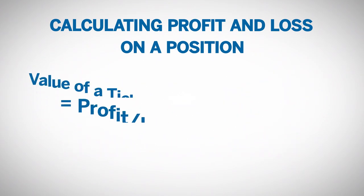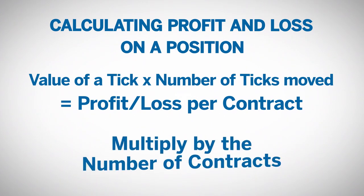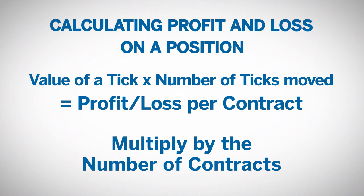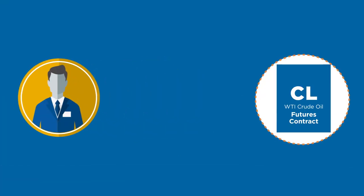Calculating profit and loss on a trade is done by multiplying the dollar value of a one-tick move by the number of ticks the futures contract has moved since you purchased the contract. This calculation gives you profit or loss per contract. You need to multiply this number by the number of contracts you own to get the total profit or loss for your position.